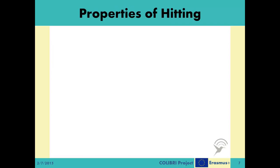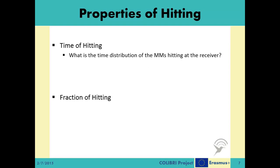Mainly, we will be analyzing two hitting properties in this system: the time of hitting and the fraction of hitting. In time of hitting, we want to learn about the time distribution of the MMs hitting at the receiver. Considering N number of MMs, do they all hit at the receiver at the same time? Probably not. Then what kind of distribution do they follow — uniform, Poisson, normal? For a more human readable result regarding this property, we might be using a hitting histogram, in which the time is divided into fixed size slots and we are counting the number of MMs hitting at the receiver in each slot.